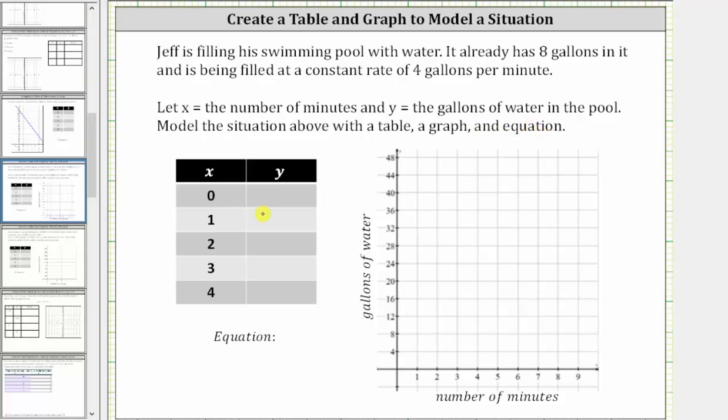Let's first complete the table, where x is the number of minutes and y equals the gallons of water in the pool. When x is equal to zero, zero minutes have passed and therefore the amount of water in the pool is the starting amount of eight gallons, which means when x is zero, y is eight.